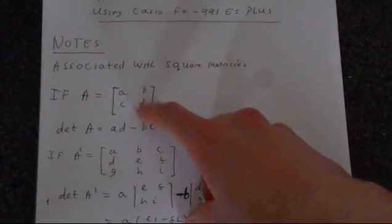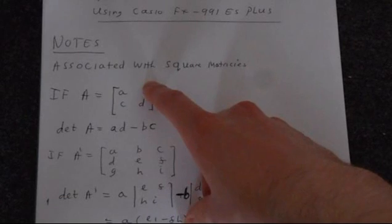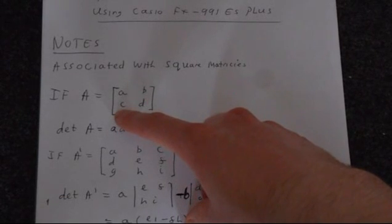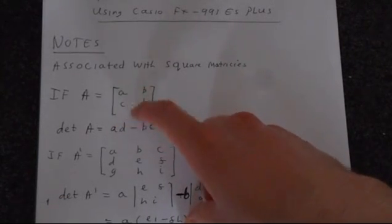So you're multiplying this diagonal — A times D — and subtracting it from the other diagonal, which is B times C.